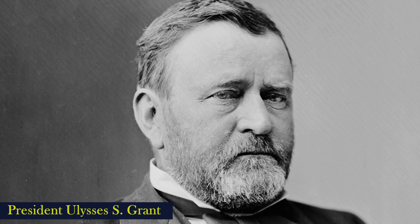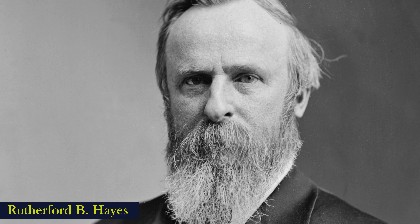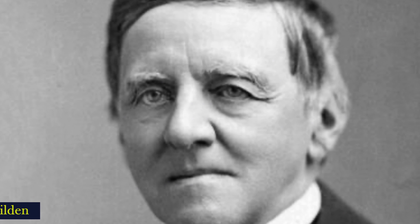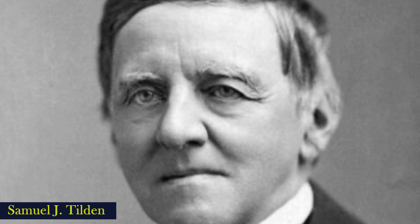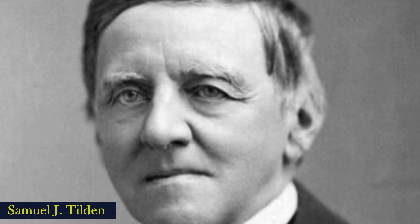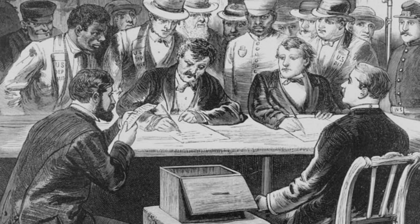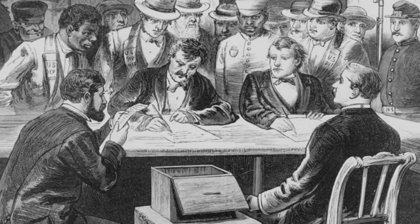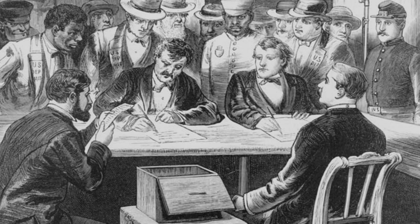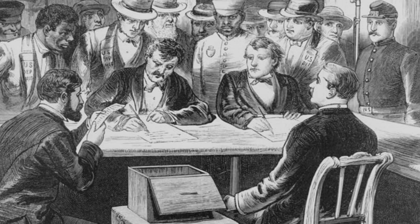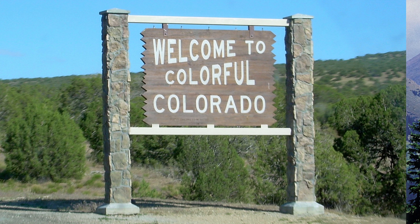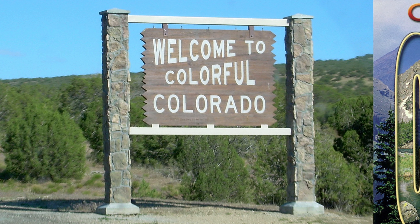The 1876 election was particularly controversial because of how close it was, the level of post-election maneuvering, and how it was eventually resolved. At the time, everyone expected Republican Ulysses S. Grant to run for an unprecedented third term. Although it was not law until the ratification of the 22nd Amendment in 1951, Grant decided against a third term after the House overwhelmingly passed, by a vote of 233 to 18, a non-binding resolution declaring that the two-term tradition was to prevent a dictatorship. Without Grant in the race, the Republicans selected Ohio Governor Rutherford B. Hayes as their candidate.